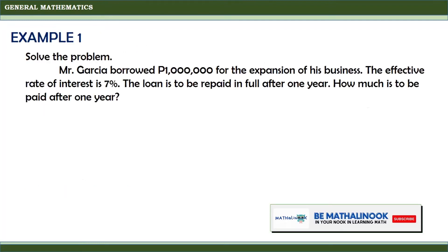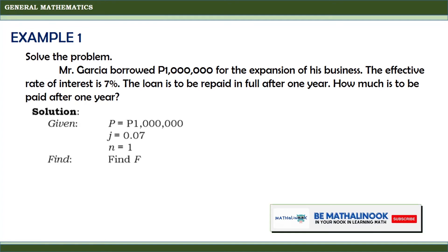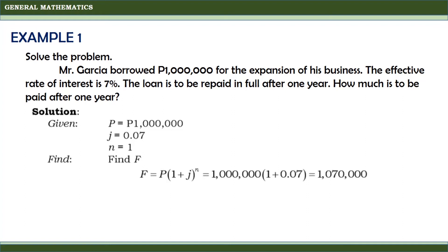Now let us solve some problems involving business and consumer loans. Mr. Garcia borrowed 1,000,000 pesos for the expansion of his business. The effective rate of interest is 7%. The loan is to be repaid in full after one year. How much is to be paid after one year? According to the problem, the principal P is equal to 1,000,000 pesos, the interest rate j is equal to 7% or 0.07, and since the loan will be repaid in full after one year, N is equal to 1. What we need to find is the future value. Remember that F = P × (1 + j)^N.